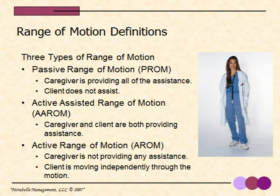The final type of range of motion is active range of motion. The caregiver won't be helping with this type of range of motion at all. We're just encouraging the client to move independently through big movements.